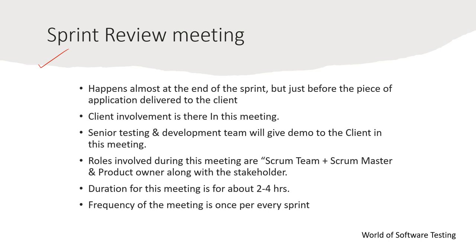Roles involved during the sprint review meeting are the scrum team, scrum master, product owner, and the stakeholder. Duration is about two to four hours and frequency is once per sprint. The scrum master is just an observer in this meeting — he does not take an active part.